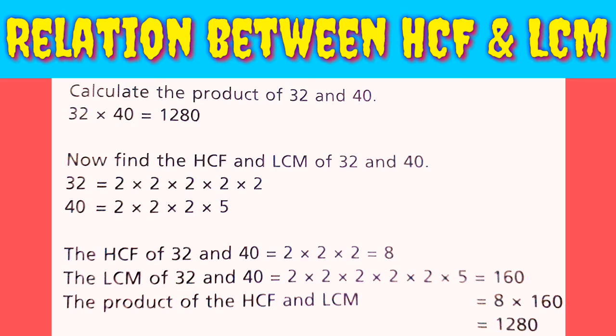Now we are moving towards today's topic: Relation between HCF and LCM. Calculate the product of 32 and 40. 32 x 40 is equal to 1280.